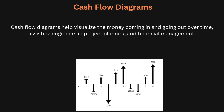Cash flow diagrams are visual representations that show how money moves over time. These diagrams help in tracking inflows — money coming in — and outflows — money going out — over a certain period. For engineers, it's crucial to map out these cash flows when planning a project. The horizontal axis represents time and the vertical lines represent money, with arrows pointing up for income and down for expenses. These diagrams make it easier to see how much money is available at different stages of a project and help in better financial planning.